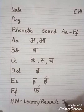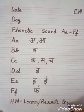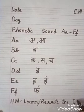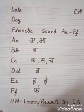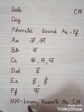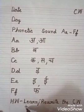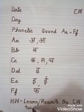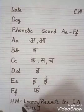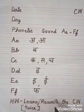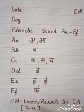Then write 'The' — T, H, E. Then leave some space. Then write C.W. — it means classwork. And here write Twice — T, W, I, C, E. Homework is: learn and rewrite the classwork twice.